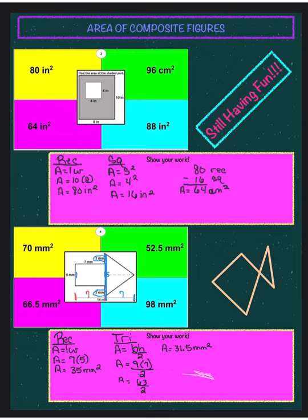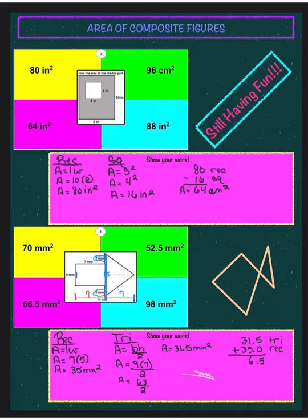Now I have the area of the rectangle and the area of the triangle. To find the total area of the composite figure, I add the two together. Adding 31.5 for the triangle to 35 for the rectangle gives me 66.5 millimeters squared.